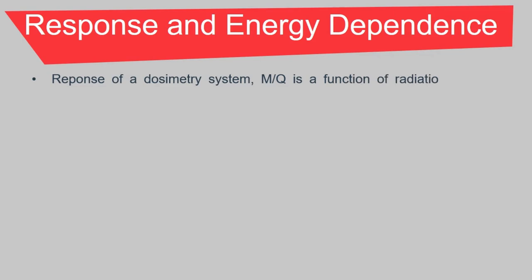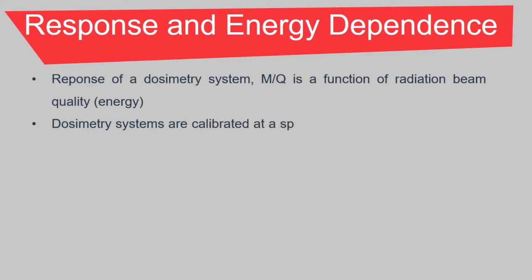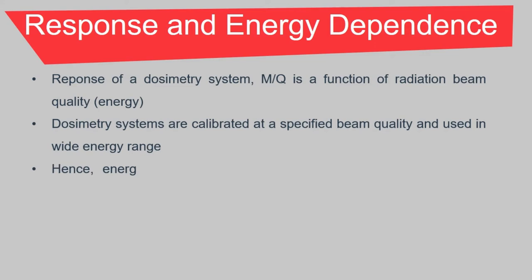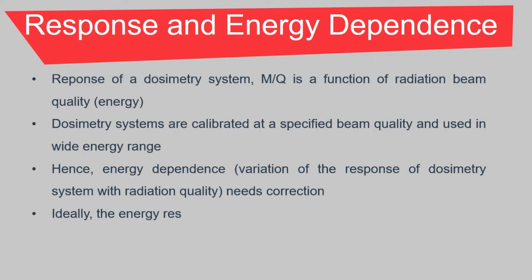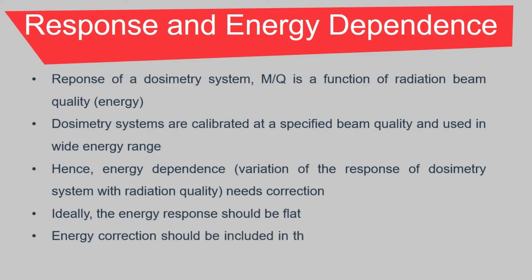The response of a dosimetric system, M over Q, is a function of radiation beam quality, which is energy. Dosimetric systems are calibrated at a specified beam quality and used in a wide energy range. Hence, energy dependence — which is the variation of the response of a dosimetric system with radiation quality — needs correction. Ideally, the energy response should be flat, and energy correction should be included in the determination of the quantity.